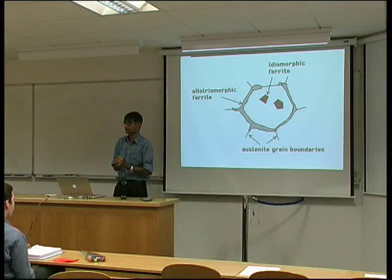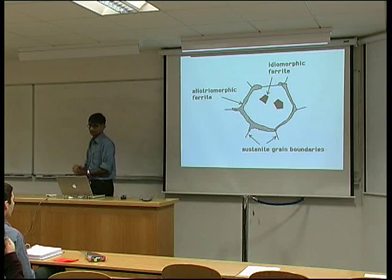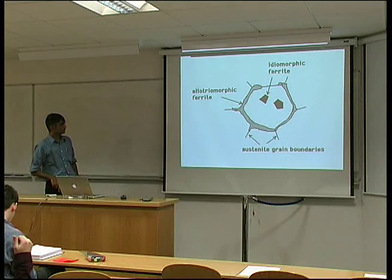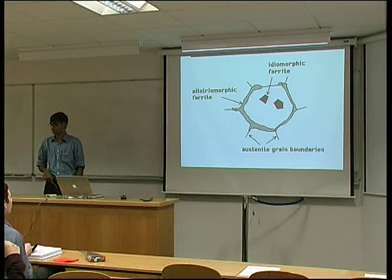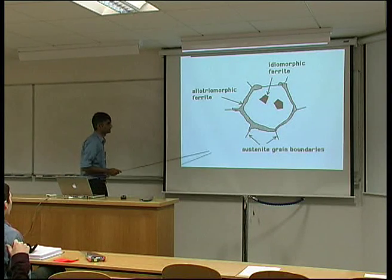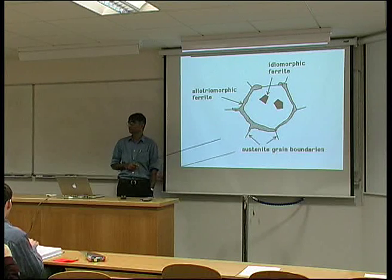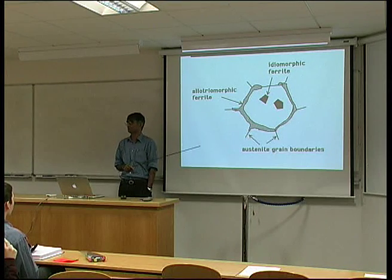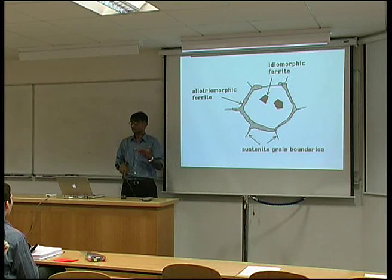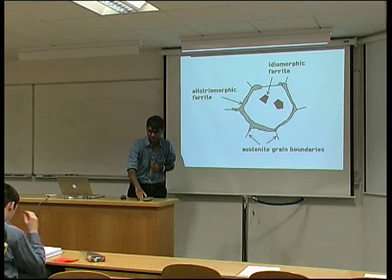For example, martensite, bainite, and Widmanstätten. This ferrite forms at temperatures close to the equilibrium temperature, and the easiest place for nucleation to happen is an austenite grain boundary — the parent grain boundary.